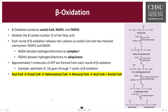In summary, beta-oxidation of fatty acids produces acetyl-CoA, NADH, and FADH2. Acetyl-CoA can be used for energy production in the citric acid cycle, while NADH and FADH2 are used to power the electron transport chain. NADH provides protons and electrons directly to complex I, and FADH2 donates hydrogen and electrons to the ubiquinone complex. On average, approximately five molecules of ATP are formed for each round of beta-oxidation.